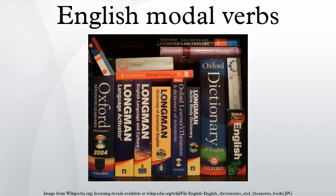Etymology: the modals 'can' and 'could' are from Old English, which were respectively present and preterite forms of the verb 'cunnan'. The silent 'l' in the spelling of 'could' results from analogy with 'would' and 'should'.